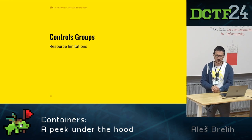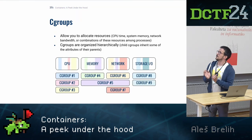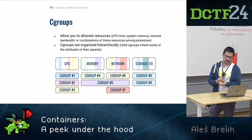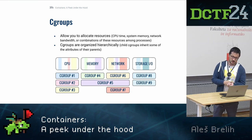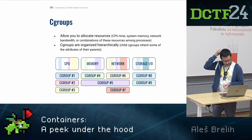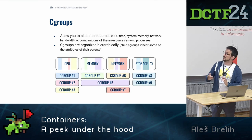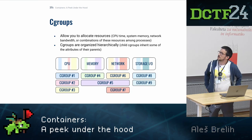Now let's move to the third part: control groups, or cgroups. This is another Linux kernel feature that allows resource limitation. What do cgroups do? Basically, they allow you to allocate resources — CPU time, system, network bandwidth, whatever — among processes. For example, a group can only take a certain chunk of CPU. This is how we limit how many resources a process can take.